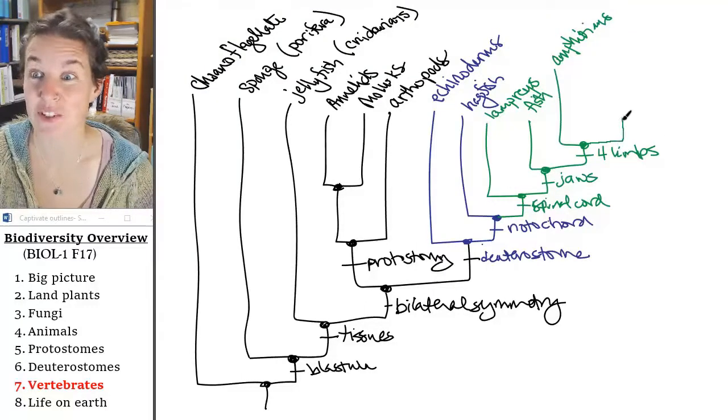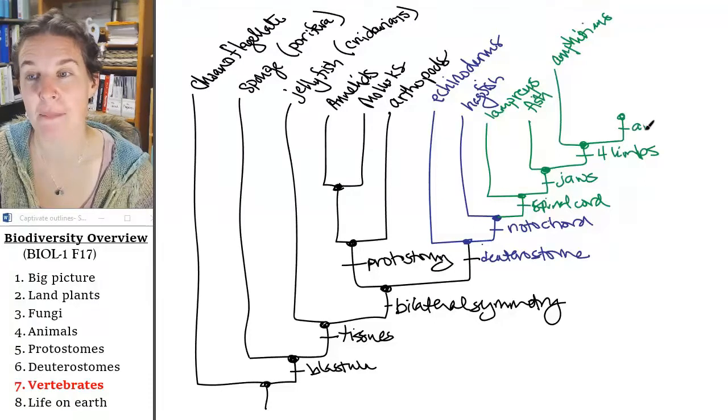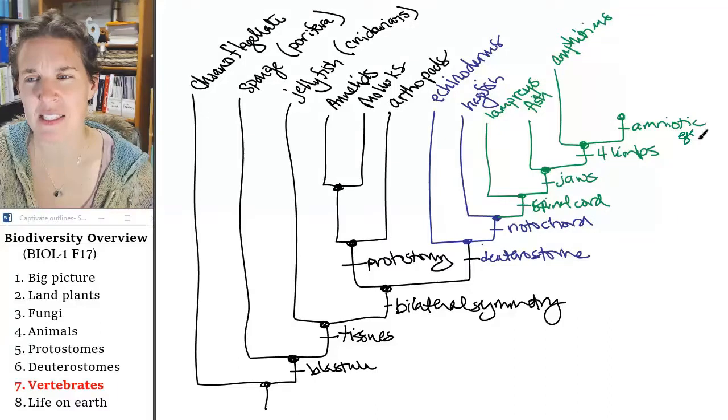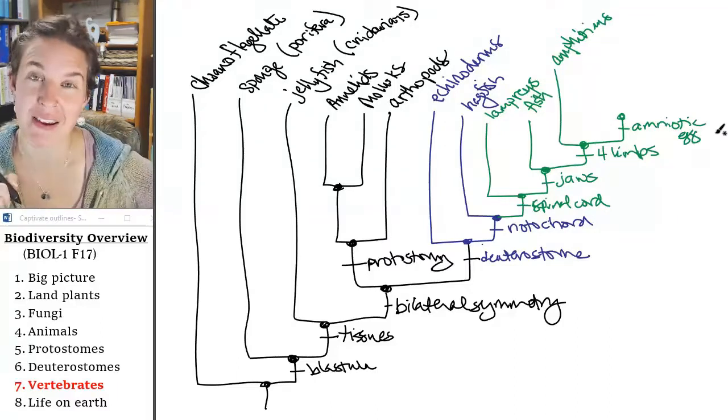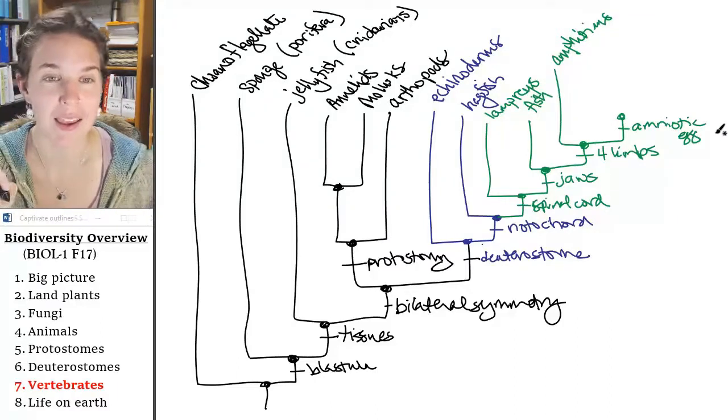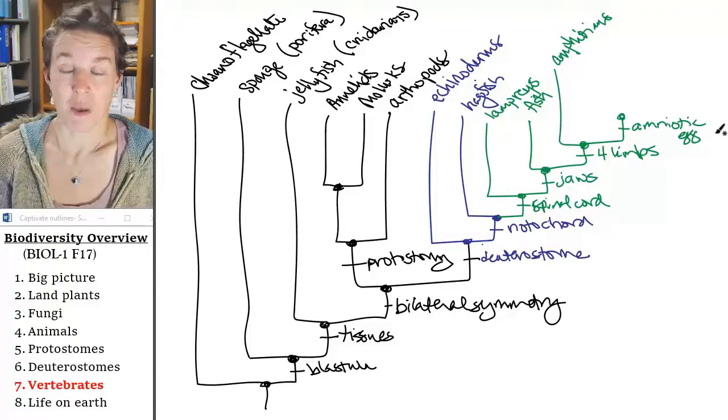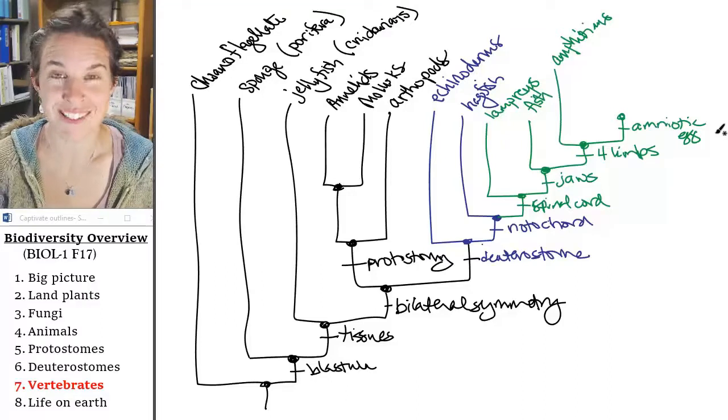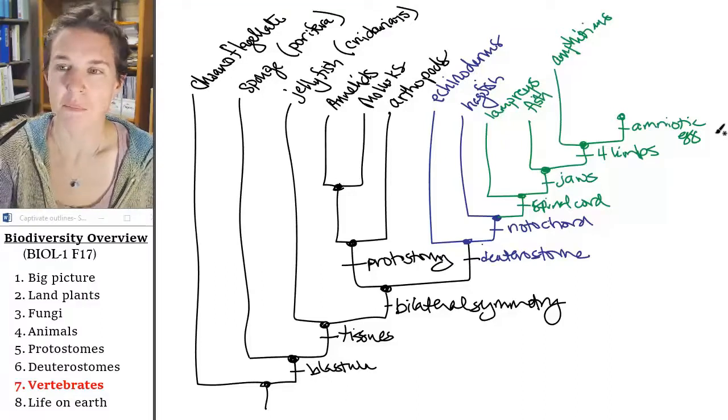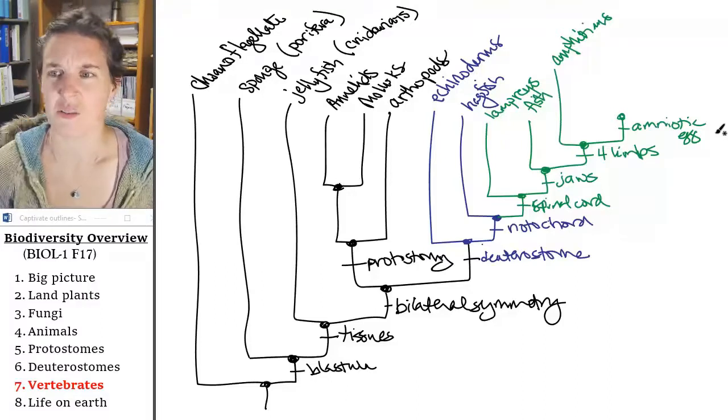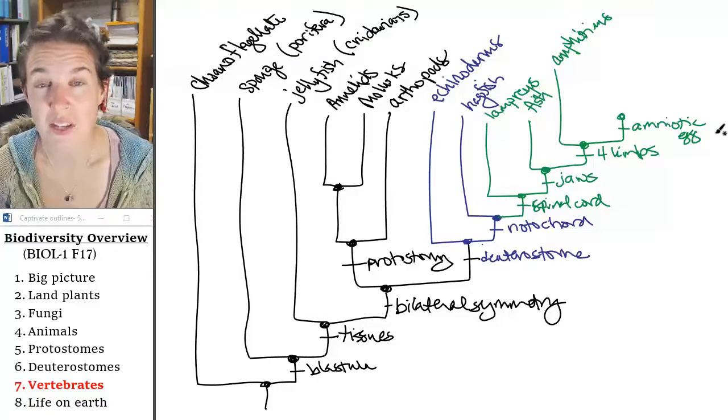The next group has a thing called the amniotic egg, and what this means is that everybody beyond this point has an amniotic egg. Have we talked about mammals yet? If the answer is no, just in case you just got here, what does that tell you? Mammals have an amniotic egg.